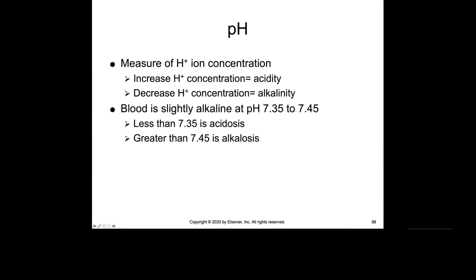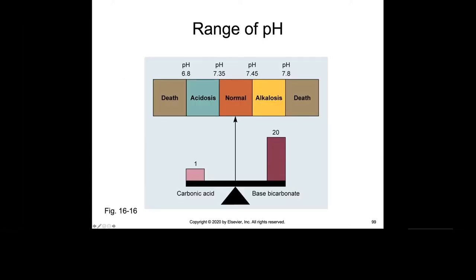When there's an increase in hydrogen concentration, this creates acidity. If there's a decrease, it's alkalinity. If pH gets extreme — down to 6.8 on the acidotic end or above 7.8 on the alkaline end — this patient could die. We have a very small range of variety that we can handle in a patient's serum before this becomes a fatal situation.